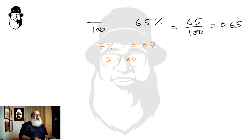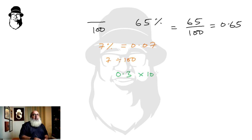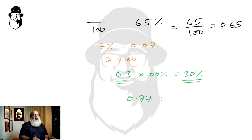To convert decimals to percentages, we just multiply by hundred percent. So zero point three becomes thirty percent, and zero point seven seven becomes seventy-seven percent.